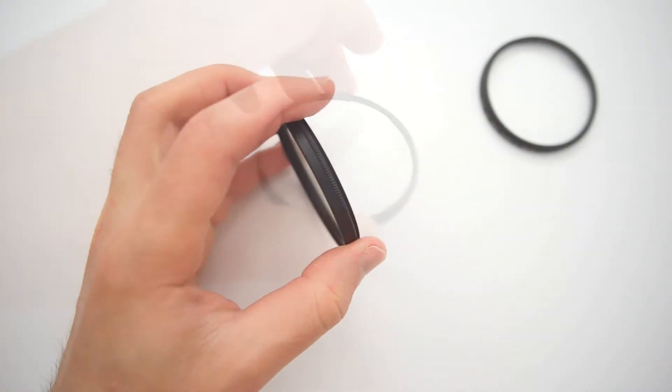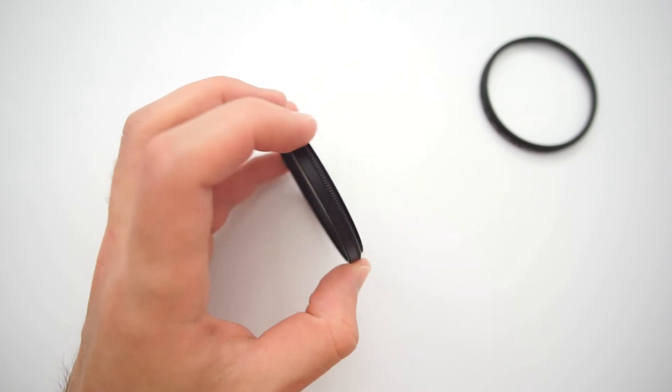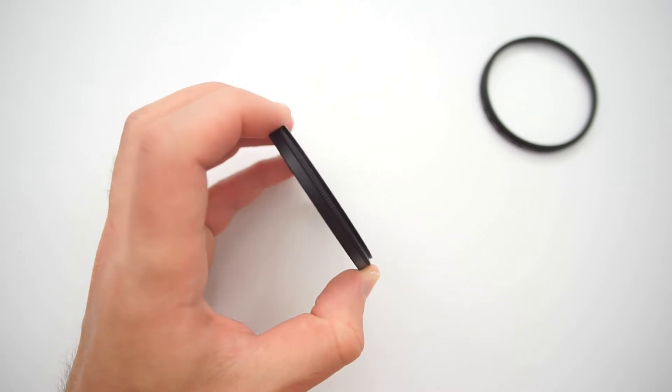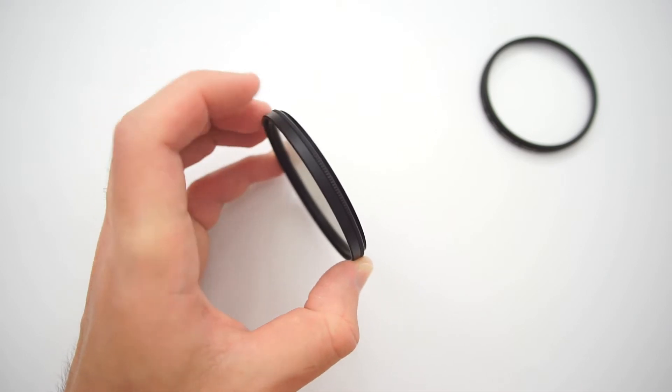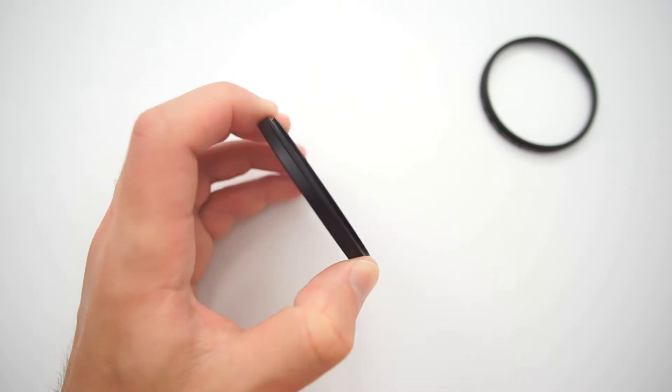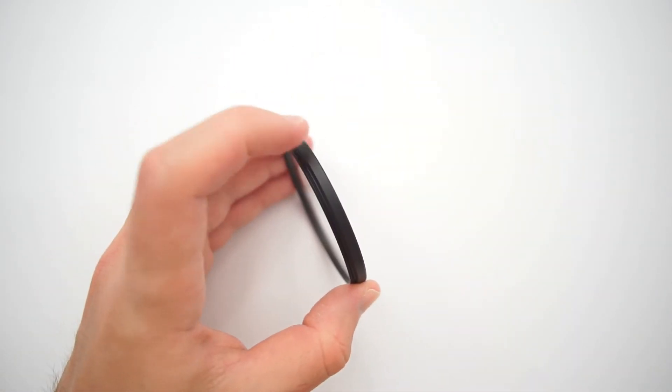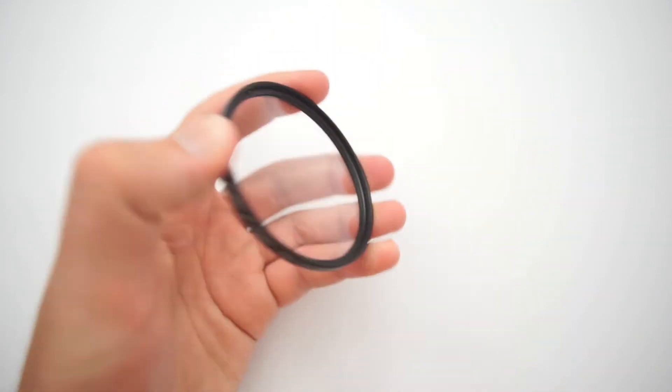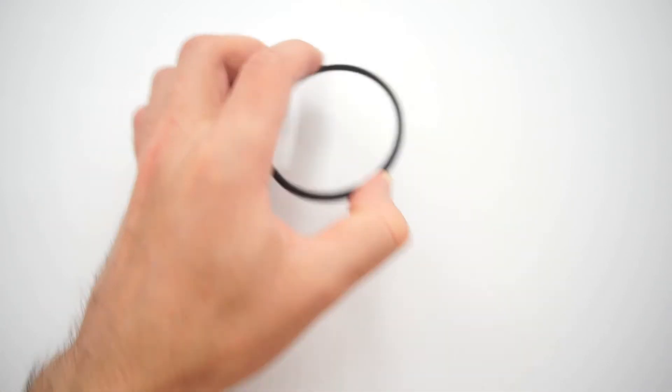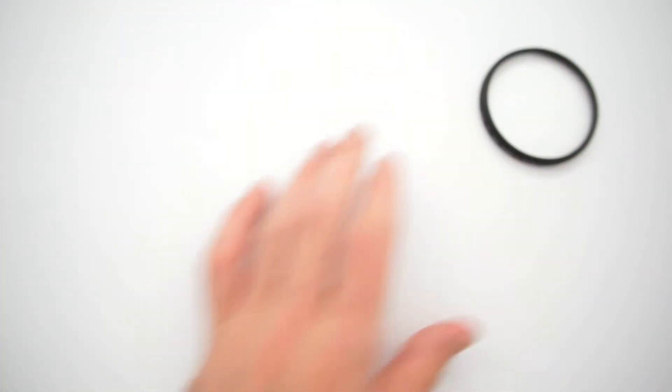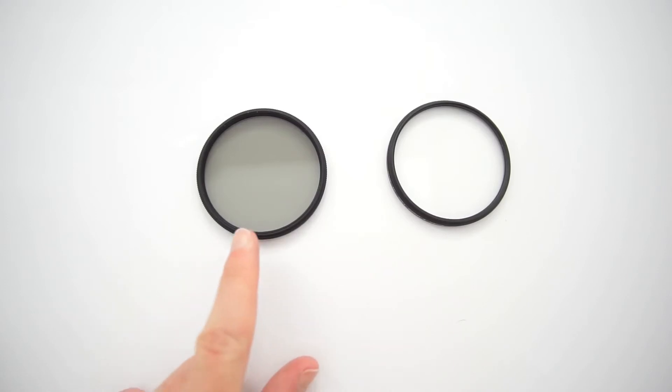As you may know all CPL filters have rotating front element. And when we place two filters together it will be difficult to get proper dimming level just with one hand. We simply should move polarization glass into the frame from UV filter.